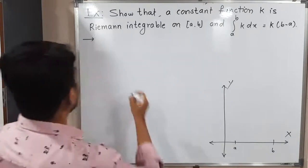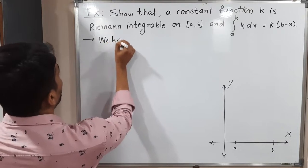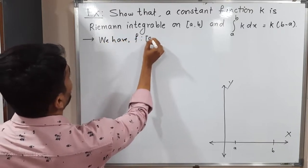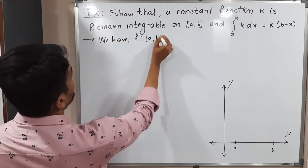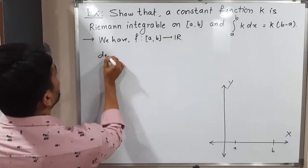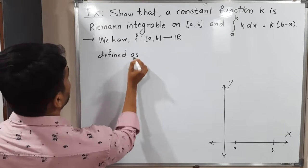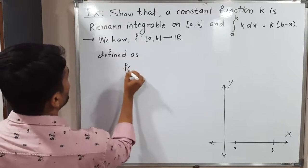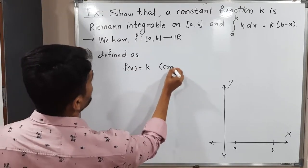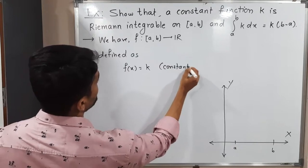We have a function f defined on closed interval [a, b] to ℝ, defined as f(x) = k. So it is a constant function — k is a constant.